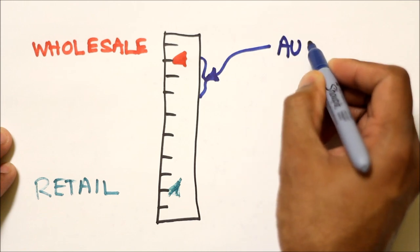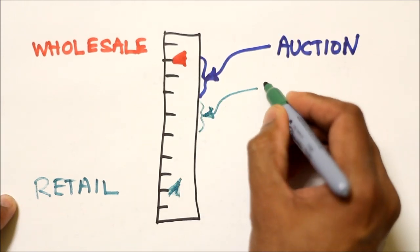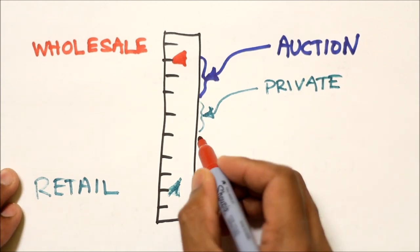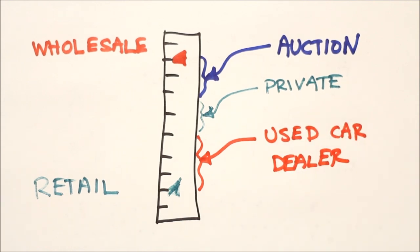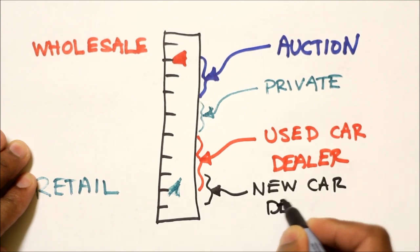A used car dealer will generally sell their cars just below retail price mostly because their vehicles aren't always the best of shape or have low mileage. Finally, a new car dealer selling used cars will usually have the highest price because they generally keep the best lease returns for resale. They also make more money off of a used car than a new car.